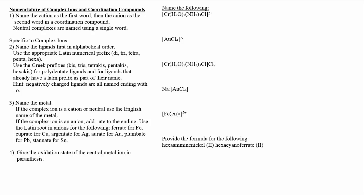So now we need to name some complex ions and coordination compounds. The rules start off very similar to what we did with ionic compounds. You name the cation first as the first word and then the anion second as the second word. Works the same way here.